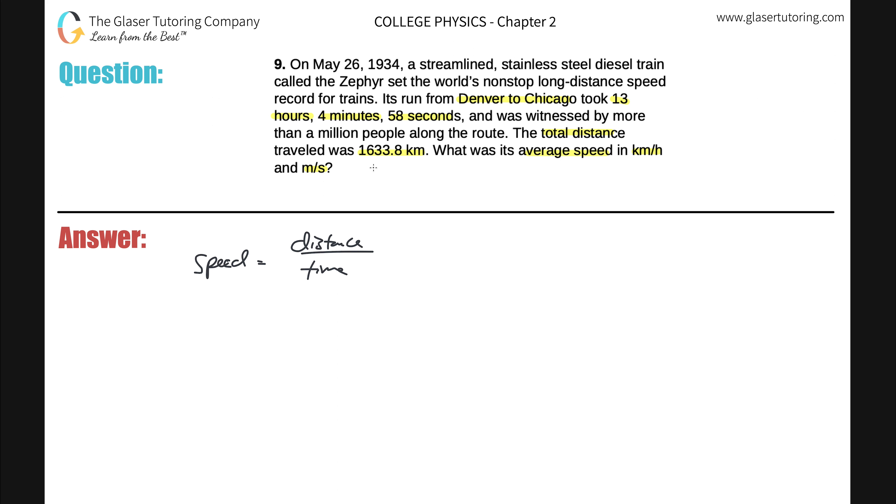So let's first take a look at what we're given in terms of the distance. The distance that they give us is 1633.8 kilometers. Now, in order for me to solve this in kilometers per hour, I need to know the time value in hours. Now, they gave us a time value of 13 hours and then 4 minutes and 58 seconds. So what we can do is look at this as we know that it's going to be at least 13 hours.